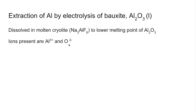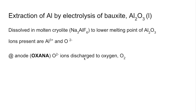At the anode — positively charged — the negative oxide ions are attracted to it and discharged, forming oxygen, which has the formula O2 as the diatomic molecule. For the half equation we go from O2 minus to O2. There's only one O on the left but two on the right, so we put a 2 in front of O2 minus. Charge-wise we now have a 4 minus charge on the left and no charge on the right, so we need 4 electrons on the right.